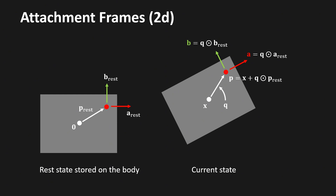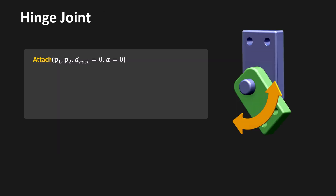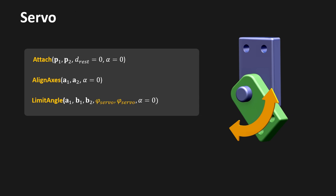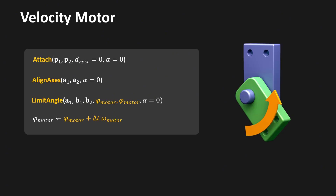We are now ready to simulate individual joint types. For the hinge joint, we first force the two attachment points to the same location by calling the attach method with a rest length of 0 and infinite stiffness, then align the rotation axes a1 and a2 with infinite stiffness, and finally apply joint limits if requested. For a servo, we perform the same operations but force the angle to be the desired angle phi-servo. For a velocity motor, we use the limit-angle procedure to force the angle to be phi-motor, and at every time step we update this angle using the user-specified angular velocity.